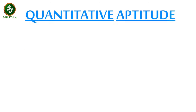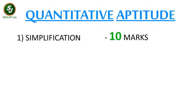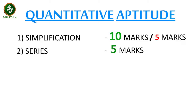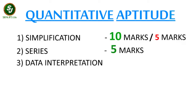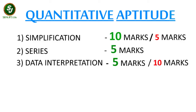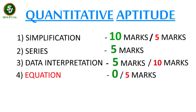The first topic under the Quantitative Aptitude section is Simplification — generally you can expect 10 marks from this topic, but it can be 5 marks also for tomorrow's examination. Next is Series, which is generally asked for 5 marks only. After that we have Data Interpretation, which is of 5 marks but you can expect 10 marks questions also. Next is Equations — questions from this section are generally not asked, but to be on the safe side you can practice them; even if it comes it will be of 5 marks only.